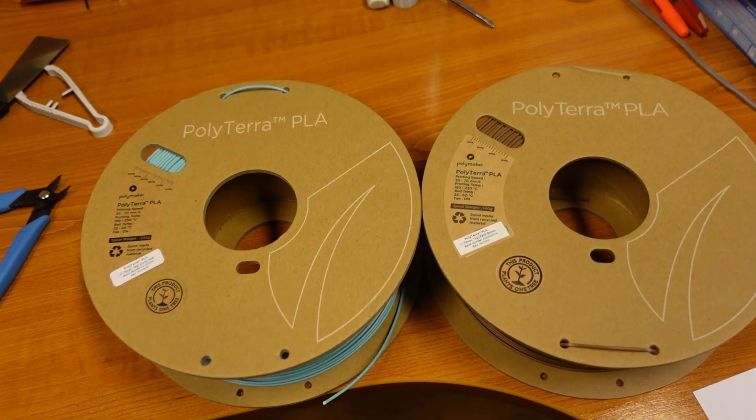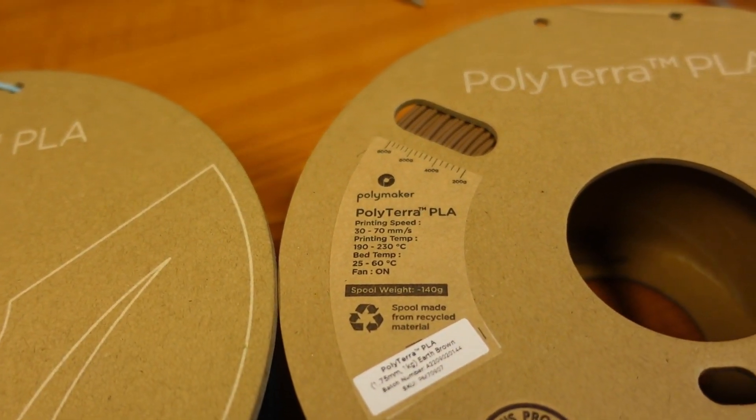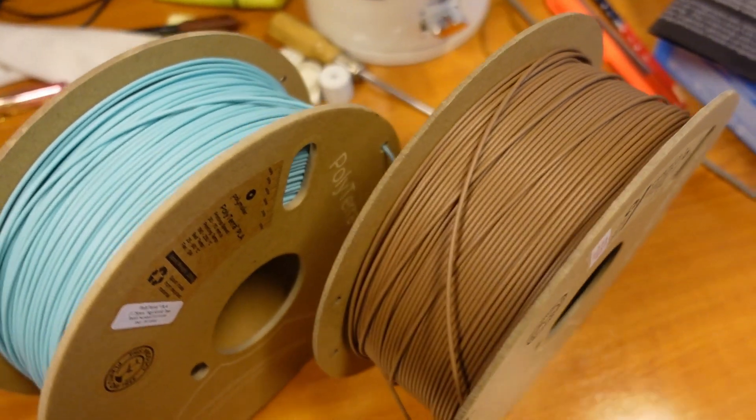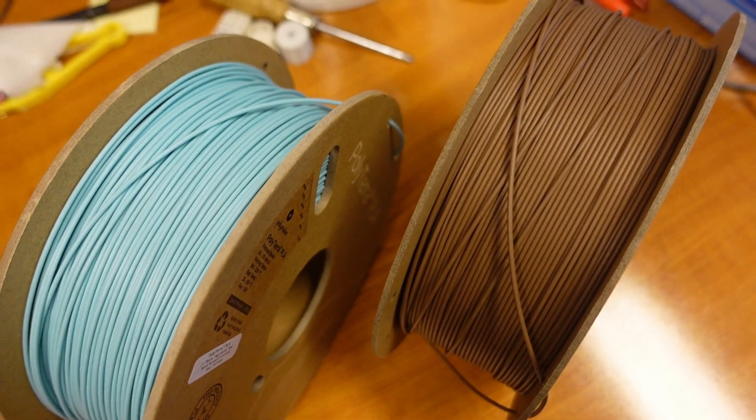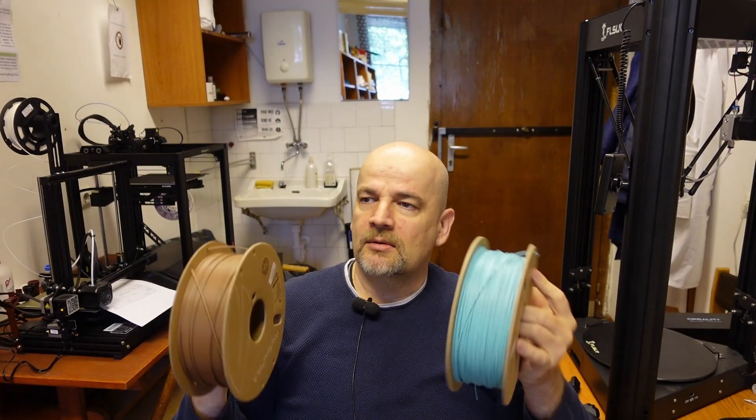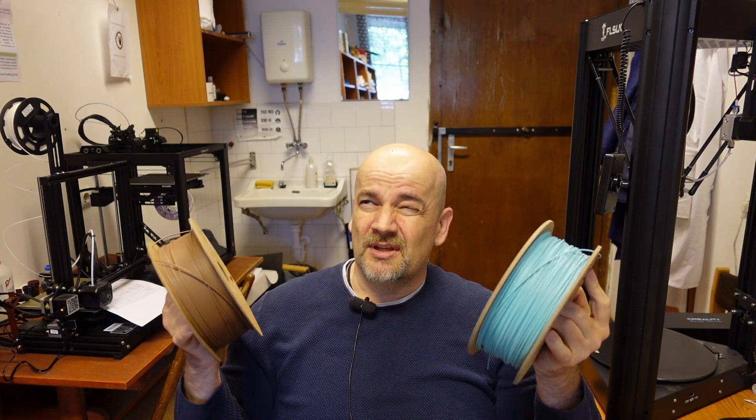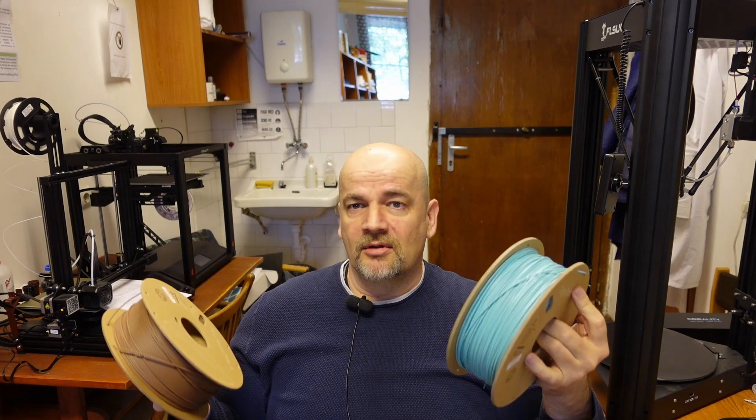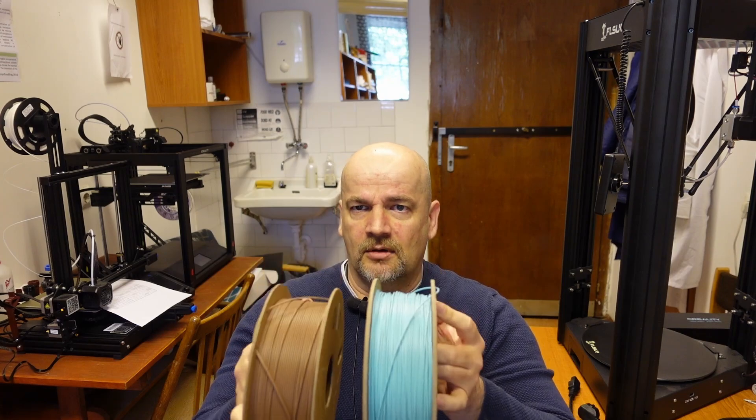For all printings I will use Polyterra PLA by Polymaker. For the stock Ender 5 S1 I will use the blue color, and then after the upgrade with the Sonic Pad I will use the brown version. I know color may have an effect, but usually that's only for mechanical strength and the difference is minimal. I want to compare the printing speeds and quality and I believe that it is independent from the color.